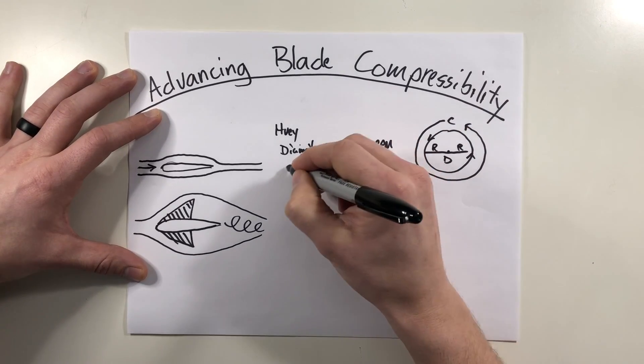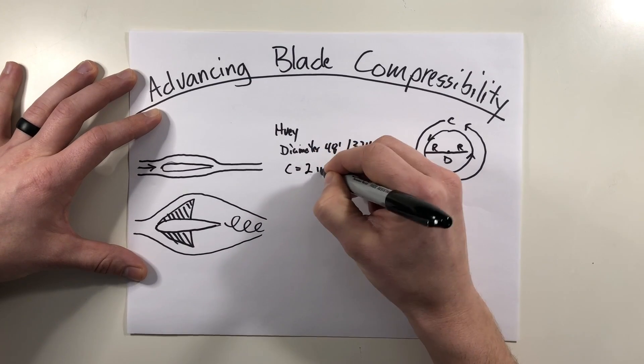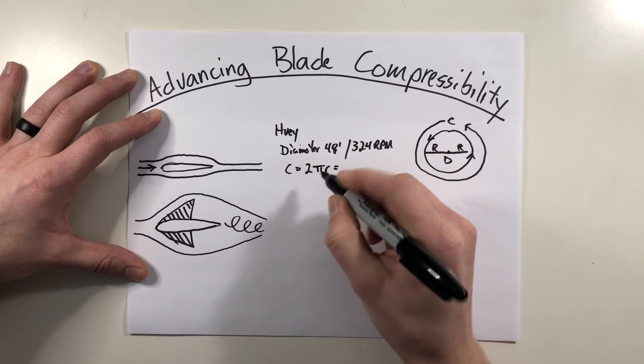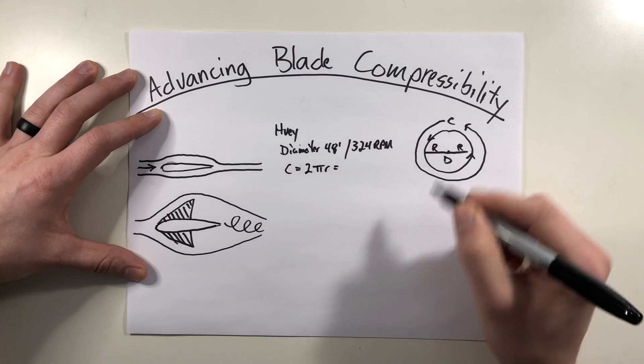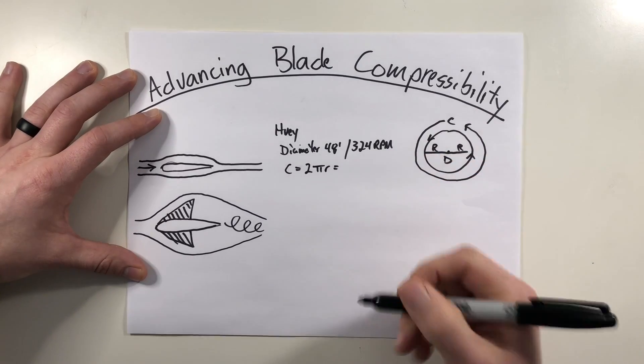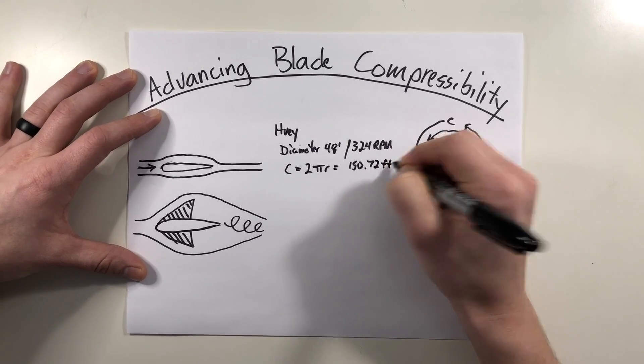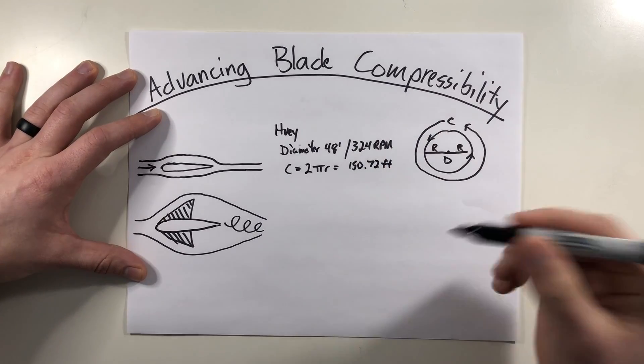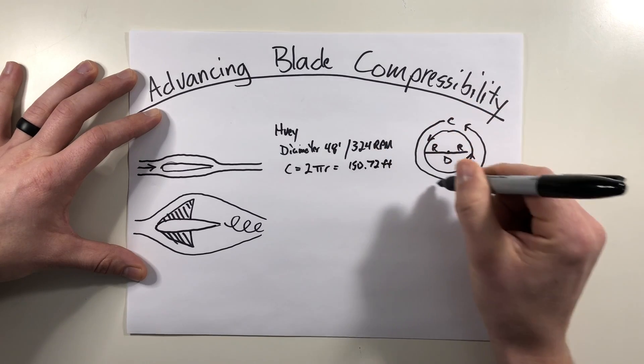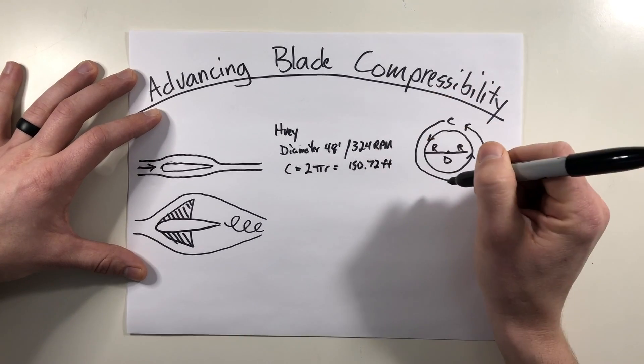So the formula for the circumference is going to be 2πr, so 2 times 3.14 times the radius, which is going to equal out to 150.72 feet. So the blade tip is traveling 150.72 feet in one revolution.